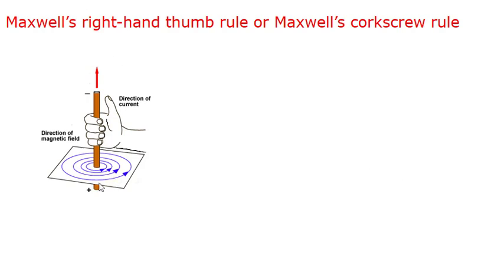Then the direction in which your fingers encircle the wire will give the direction of magnetic field around the wire. In the diagram I have held this current-carrying conductor with my right hand and the thumb is indicating the direction of current. So these curled fingers indicate the direction of magnetic field — the curled fingers are in the anticlockwise direction, which gives the direction of the magnetic field. If the current is flowing from top to bottom, your thumb will be in the downward direction, and in that case you will find that your curled fingers are in the clockwise direction.